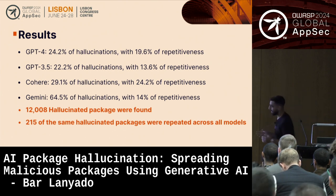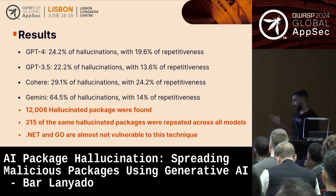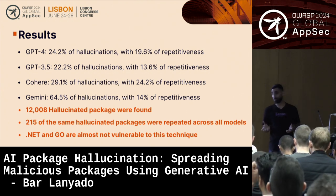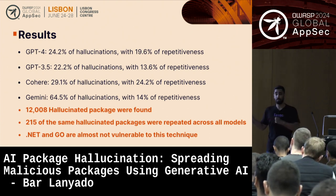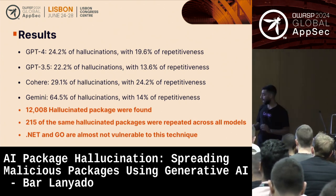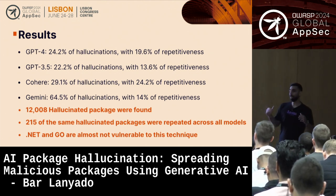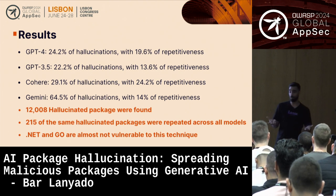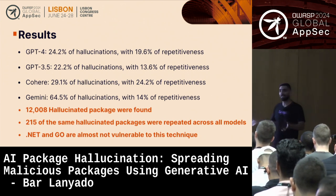Across all models I received 12,000 hallucinated packages that these models are helping me spread. Across all models together I found 215 packages hallucinated by more than one model — for different questions too. As a fun fact, in .NET and Go this technique would not work. .NET has a lot of reserved prefixes and most hallucinated packages contained those prefixes, so I couldn't upload a malicious package. In Go there's no centralized package repository — packages point to GitHub repositories or your own domain — and most hallucinations pointed to existing accounts but non-existing repositories, making exploitation unlikely.